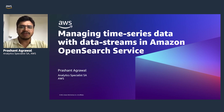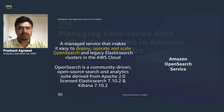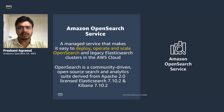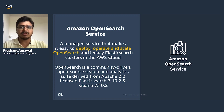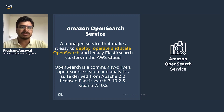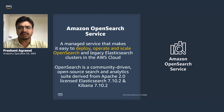Before getting into data streams, let me explain Amazon OpenSearch Service. Amazon OpenSearch Service is a managed service that makes it easy to deploy, operate, and scale OpenSearch, along with legacy Elasticsearch clusters in AWS Cloud. OpenSearch is a community-driven open source search and analytics suite, derived from the Apache 2.0 licensed version of Elasticsearch 7.10.2 and Kibana 7.10.2.